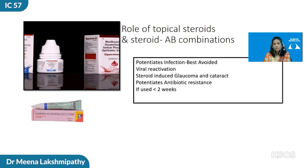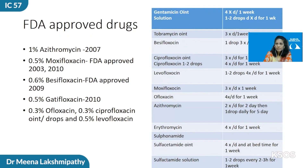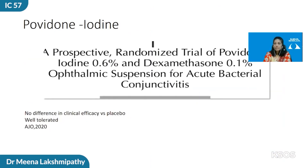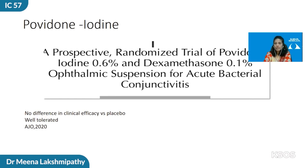If steroids are prescribed, they should be used for less than two weeks. These are the FDA-approved drugs listed on the left side, with the frequency of topical medications on the right. These are usually preferred to be dosed less frequently — only up to four times a day and for less than a week. Most drops are stopped within one week. A study published in AGO 2020 showed no clinically significant role of povidone iodine 0.6% with dexamethasone 0.1% versus a placebo. As of now, although povidone iodine has been used for viral conjunctivitis, for bacterial conjunctivitis it is still not very reliable.